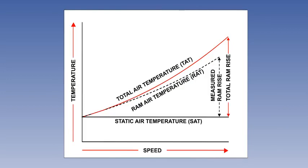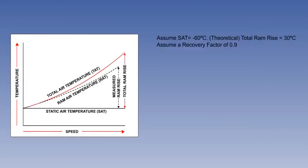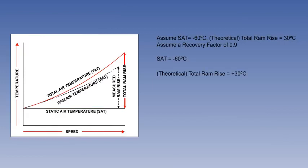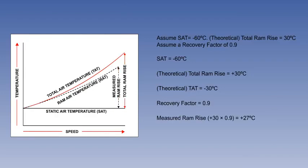Let's see how these definitions interact. We'll assume an aircraft experiencing a static air temperature of minus 60 degrees Celsius at a speed where the theoretical total ram rise would be plus 30 degrees. Assume a recovery factor of 0.9. A static air temperature is minus 60 Celsius — remember, the total air temperature is a theoretical figure and cannot actually be achieved. The total air temperature would therefore be minus 30 degrees Celsius. The recovery factor is 90%, expressed as 0.9. Therefore, the measured ram rise is total ram rise times 0.9, which is plus 27 degrees.